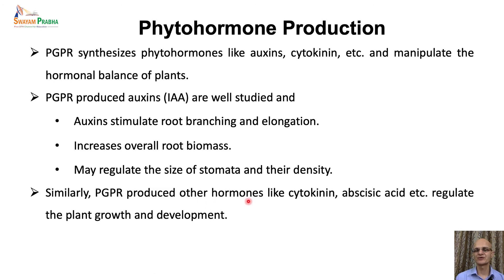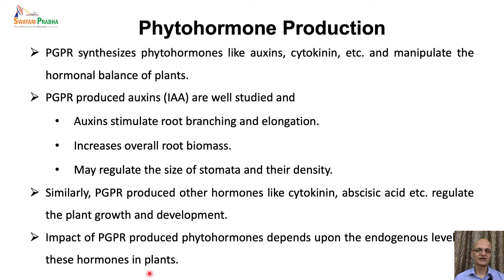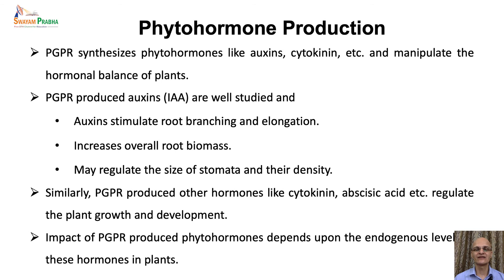PGPRs can also produce other hormones like cytokinin, gibberellins, and abscisic acid, which regulate plant growth and development, though very little data is available for these hormones till now. Overall, the impact of PGPR-produced phytohormones depends upon the endogenous level of these hormones in the plants too, since phytohormones are also produced by the plants themselves and their concentration may vary among tissues or different species. The endogenous level of phytohormones and their interaction with exogenous phytohormones produced by PGPRs together regulate the overall impact on plant growth.